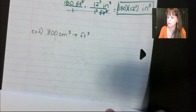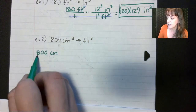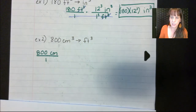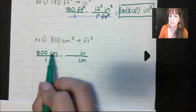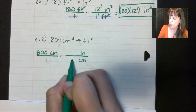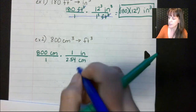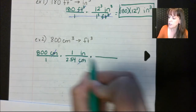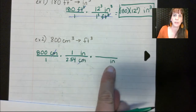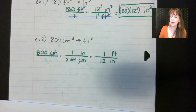Let's try another one: 800 centimeters cubed to feet cubed — this is going to be a doozy. 800 centimeters over one. Let's ignore the cubes for a second. We're going centimeters to inches, putting centimeters downstairs to cancel them out. In one inch there are 2.54 centimeters. That cancels the centimeters. But we need to get to feet, so we do another unit conversion with inches downstairs and feet upstairs — one foot is 12 inches. Now I can cancel out my inches and I'm ready to cube everything.